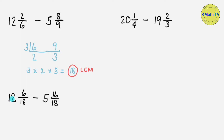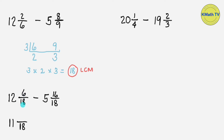From the whole number 12, let's borrow 1, so 12 will become 11. For the fraction, just copy the denominator 18. Then, to write the numerator, just look at the numerator and the denominator of the minuend and add them. 6 plus 18 equals 24, so the numerator is 24. That's the trick in regrouping.